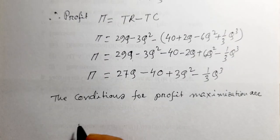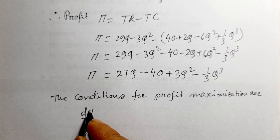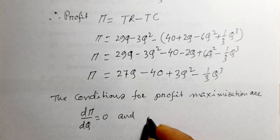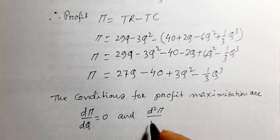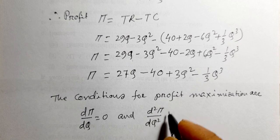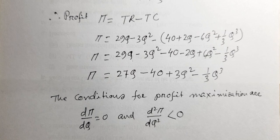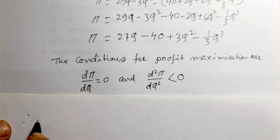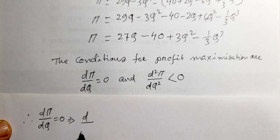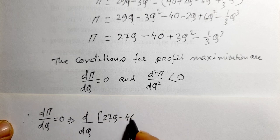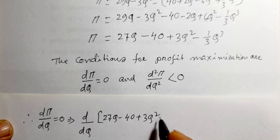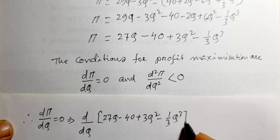The conditions for profit maximization are: first, the derivative of the profit function with respect to q must equal zero; and second, the second-order derivative of the profit function with respect to q must be less than zero. Therefore, dπ/dq = 0 implies d/dq of (27q minus 40 plus 4q² minus (1/3)q³) equals zero.